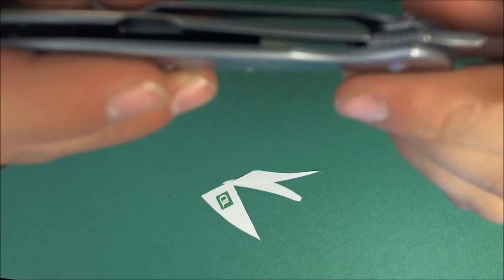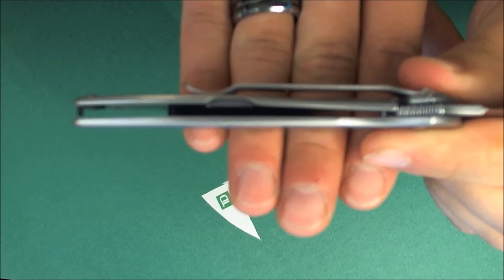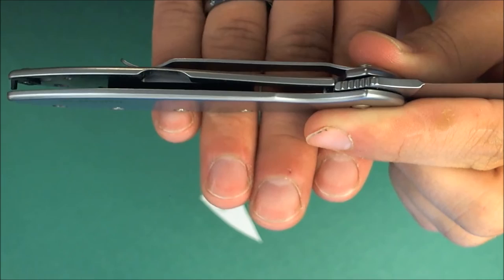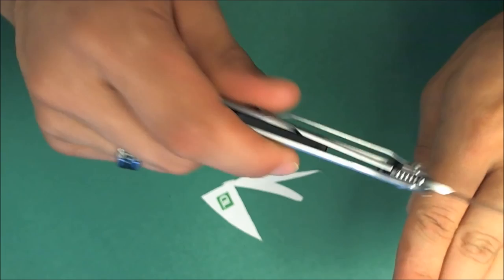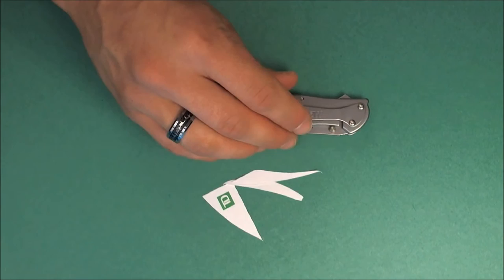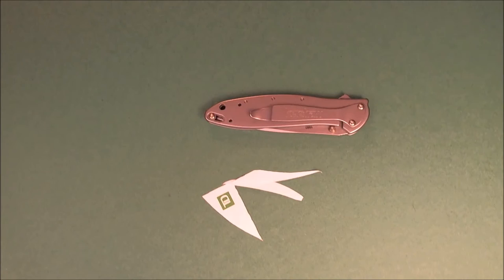As far as the lockup goes, I'll show that for you guys. It's rock solid. It's about maybe 30% lockup. Which is all you really need. There we go. Maybe a little bit less. Maybe closer to 20%. But I mean, I'd feel safe doing the spine whack test on that. No blade play out of the box in any direction. Works beautifully well.